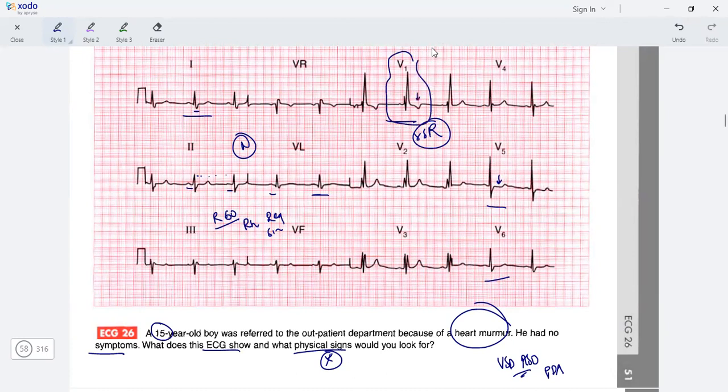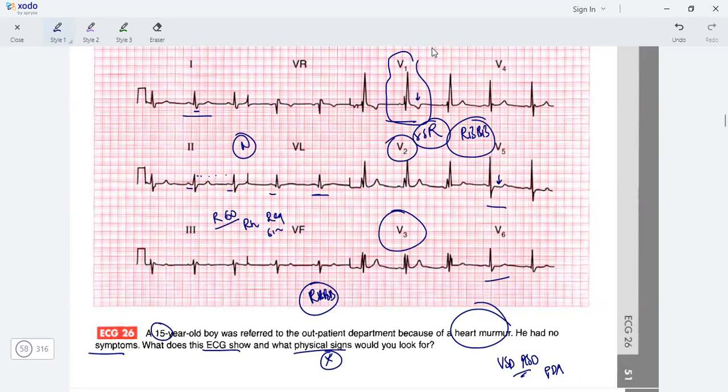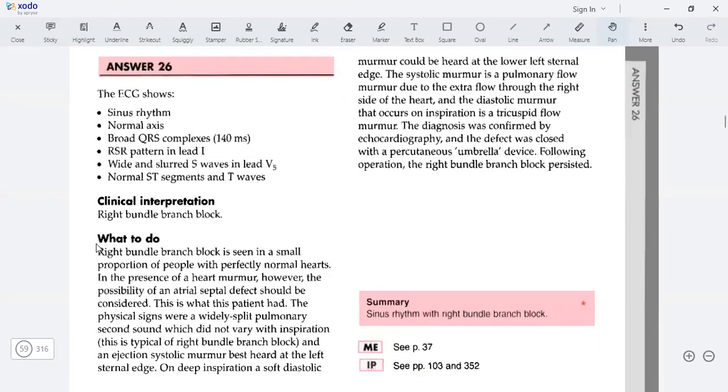Whenever you have RSR pattern with some widening of the QRS, plus ST depression and some T inversion, this is an RBBB pattern. You have normal sinus rhythm with RBBB pattern extending to V2 and V3. Whenever you have RBBB, you have evidence of right ventricular stress or overload, maybe due to ASD. The patient has a murmur and RBBB is a sign of ASD, especially secundum ASD, which often has RBBB. Our diagnosis is correct: sinus rhythm with RBBB.